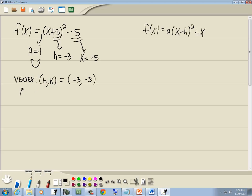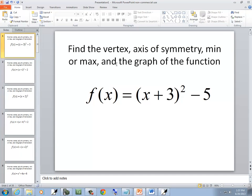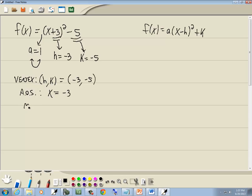The axis of symmetry is x equals, and then the x part of the vertex. So it's x equals negative 3. Min or max, since our graph opens up, that means we're going to have a minimum. And it's the y part. So minimum of negative 5.